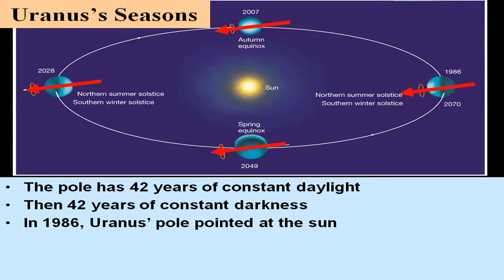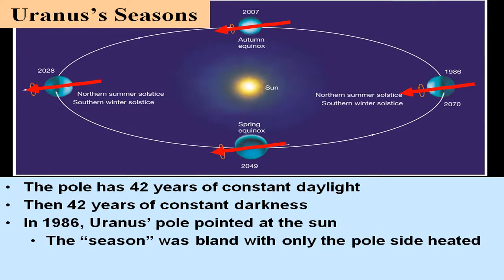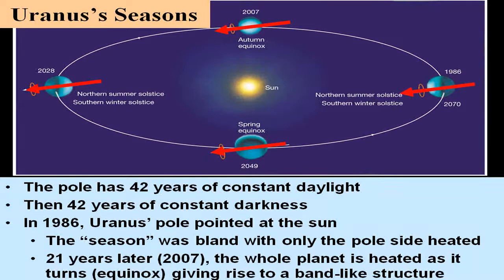In 1986, when Voyager saw Uranus, its pole was pointing towards the Sun, so Voyager was seeing a Uranus that was being uniformly heated on that side. Hence, there was no differential heating causing bands or storms to appear, and it looked like a pale green, solid-colored disk. Now, 21 years later in 2007, the equator of Uranus is facing towards the Sun, giving rise to differential heating and the band structure now observed on Uranus.